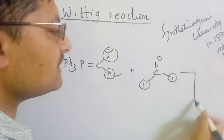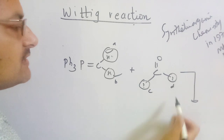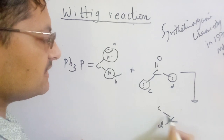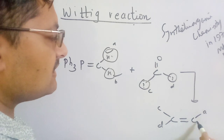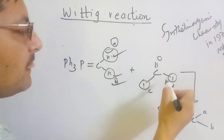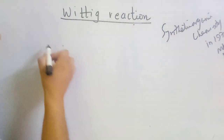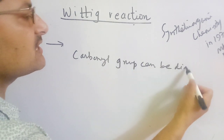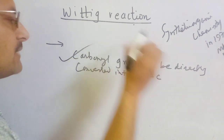This reaction can be used to synthesize a variety of compounds. If we have different carbonyl groups A, B, C, D — with different substituents — we can create a variety of olefin alkenes. The carbonyl group can be directly converted into alkene, and a wide variety of alkenes can be synthesized this way.